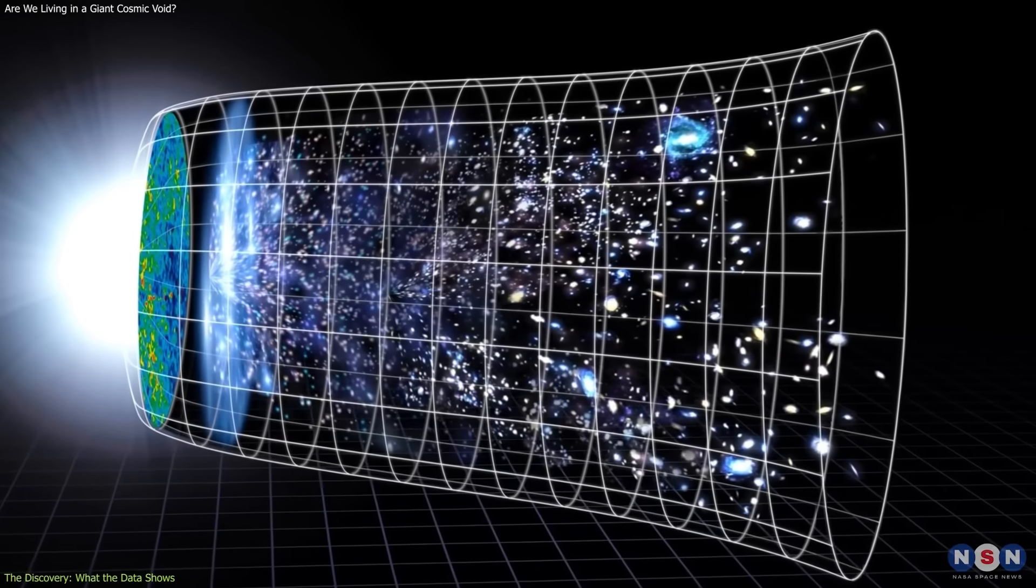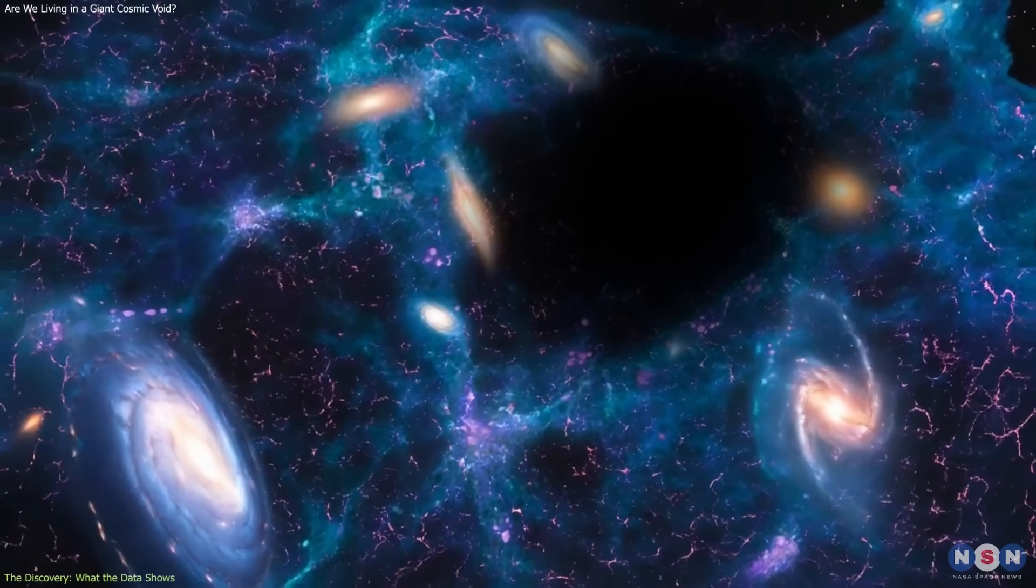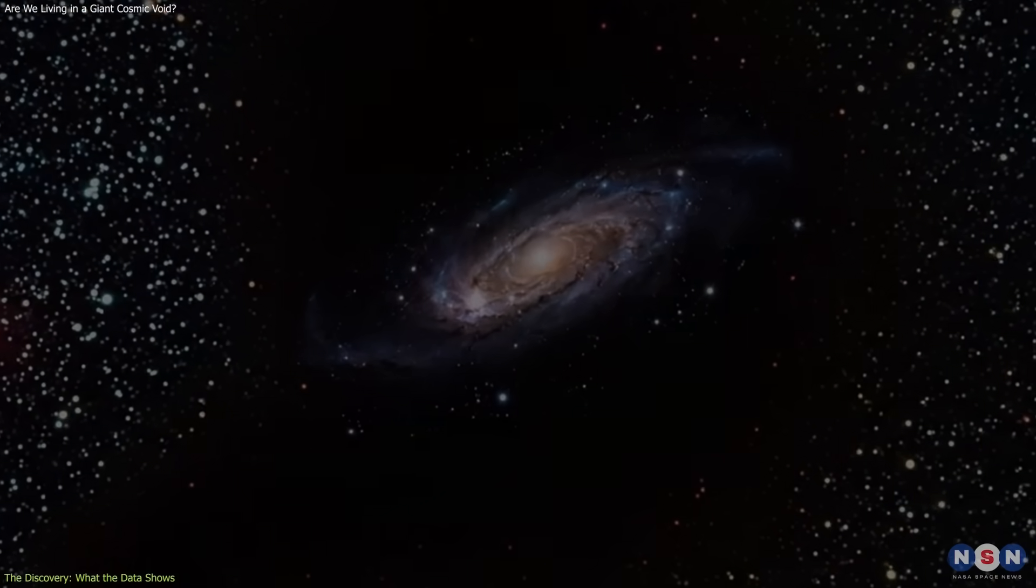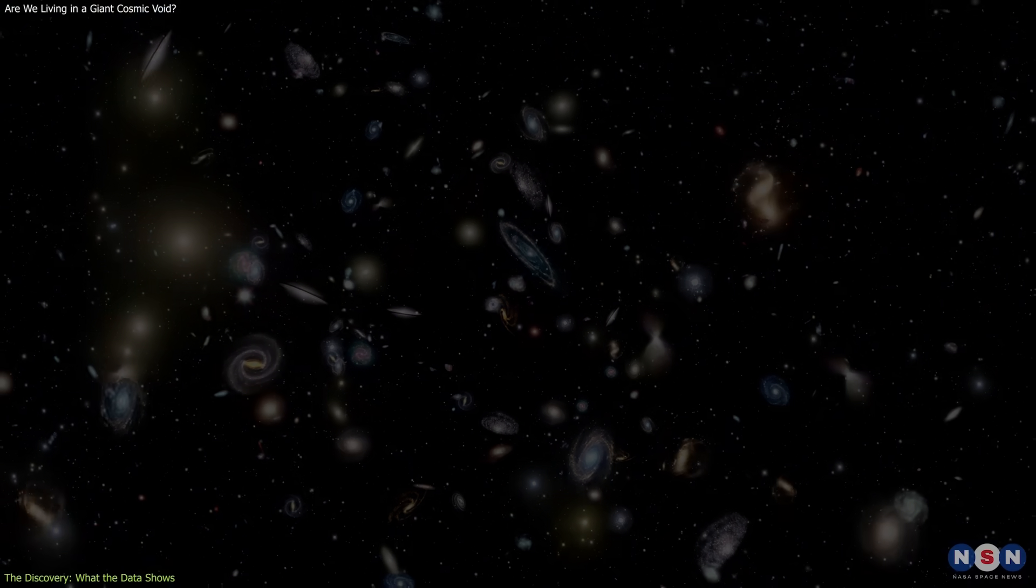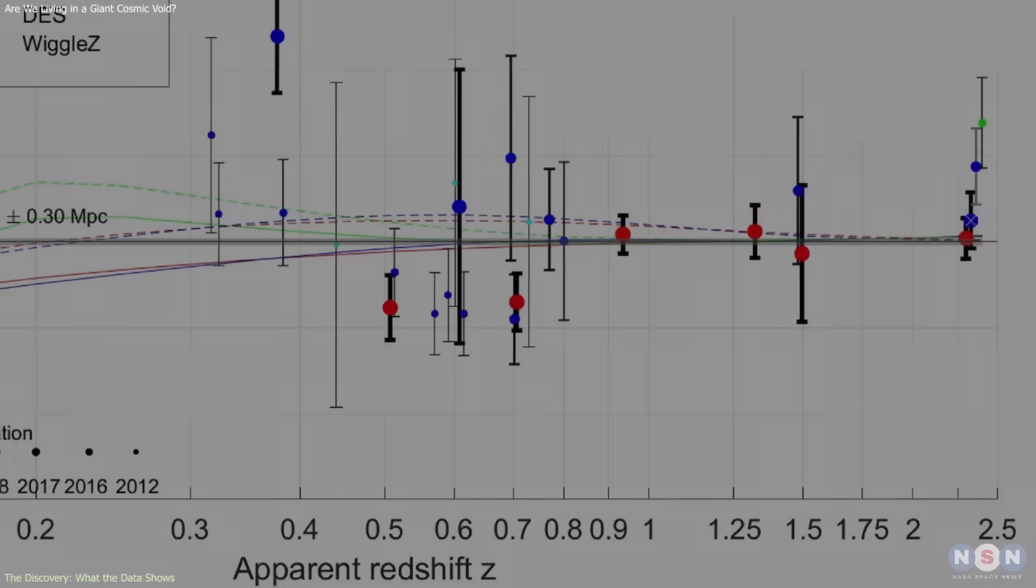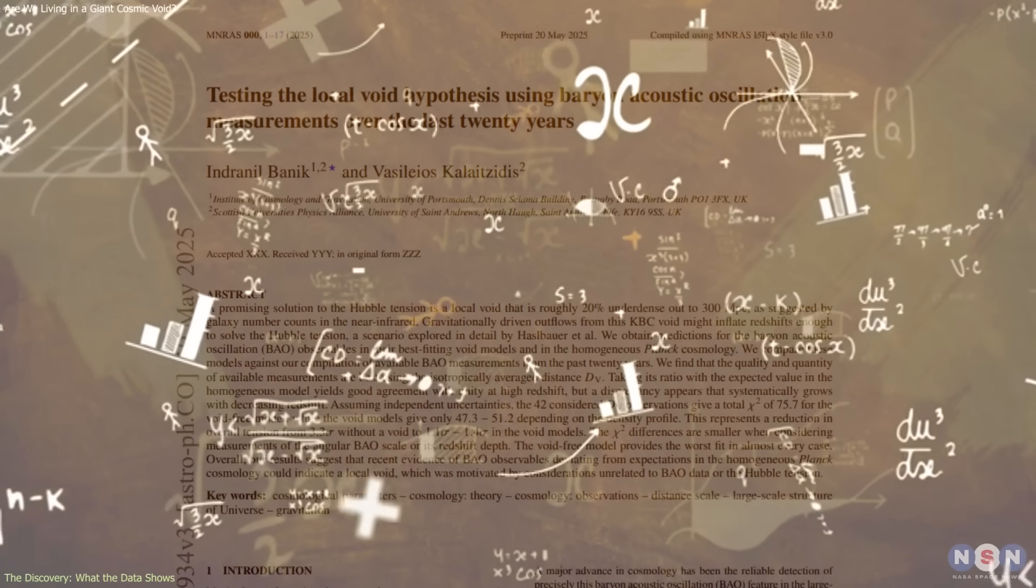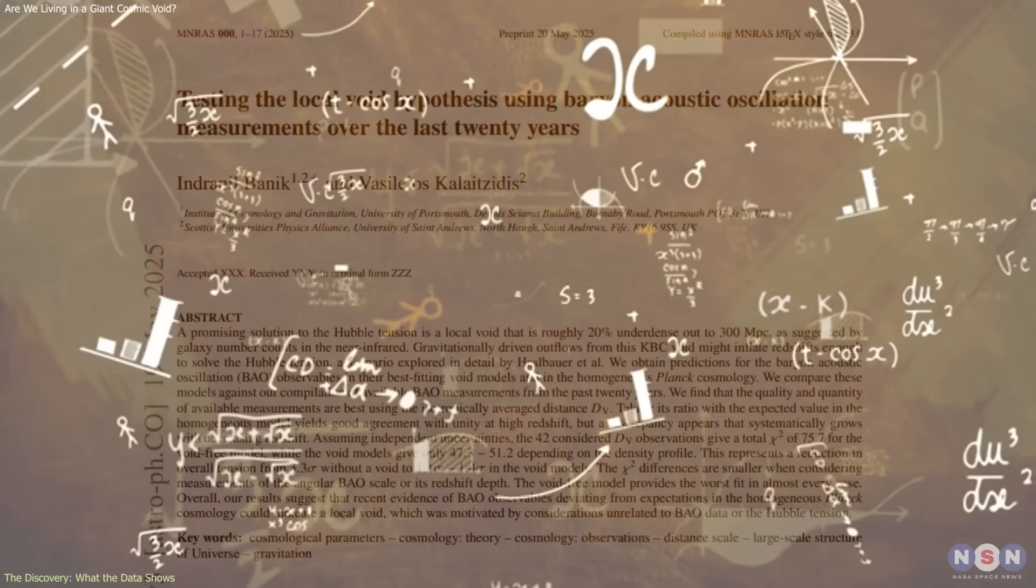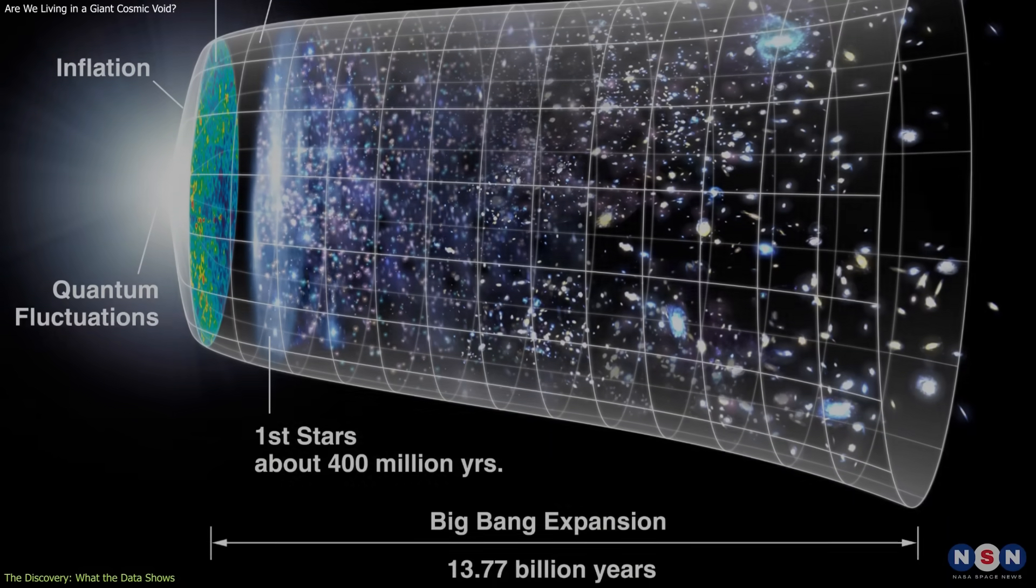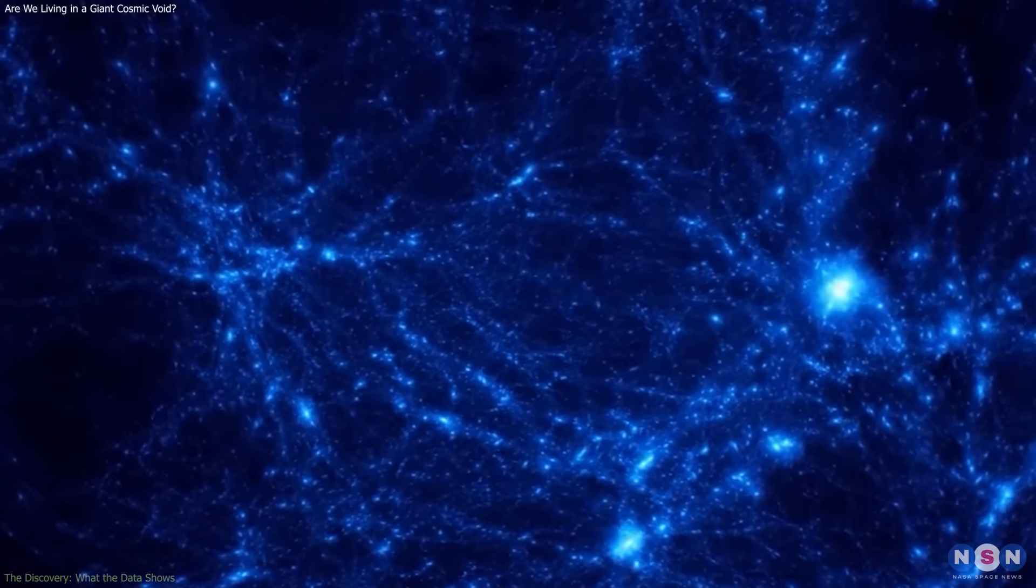When the researchers compared cosmological models with and without a local underdensity, the difference was clear. Models including a large local void consistently reproduced the observed BAO patterns, while models assuming a uniform local universe struggled to do so. The statistical preference for the void scenario was strong. Importantly, the result did not depend on adjusting early universe physics or altering the underlying cosmological framework. It emerged from how late-time observations behave when interpreted in the context of large-scale structure.